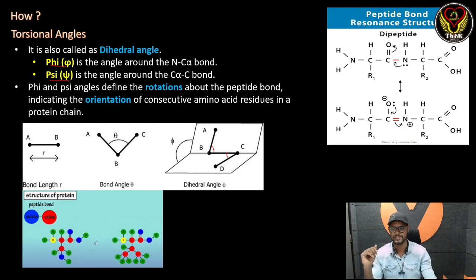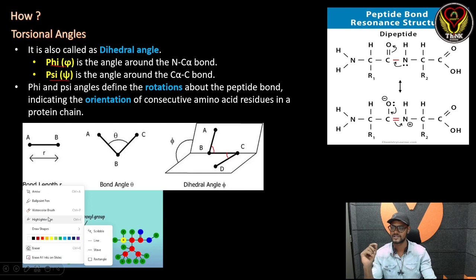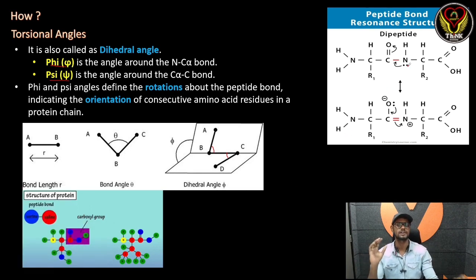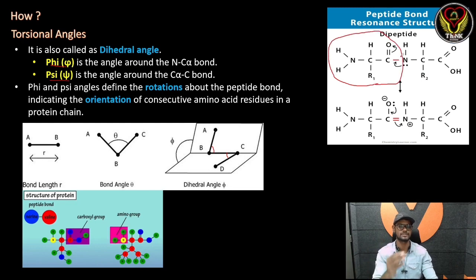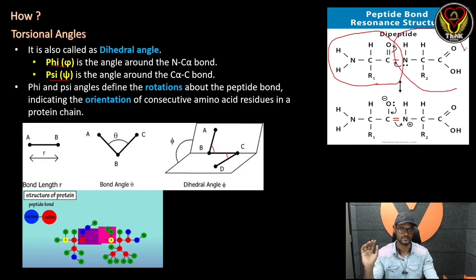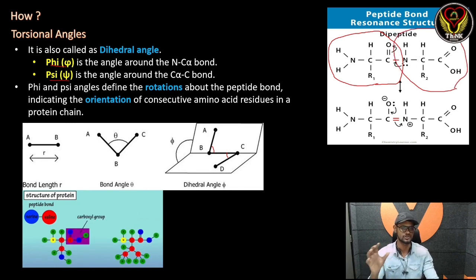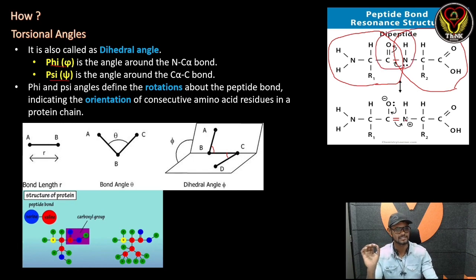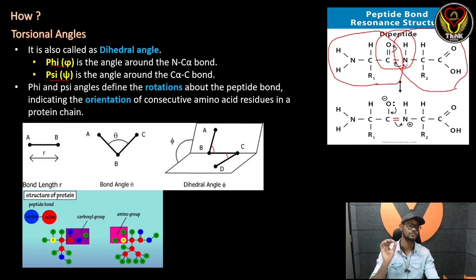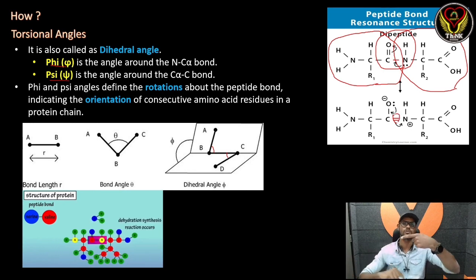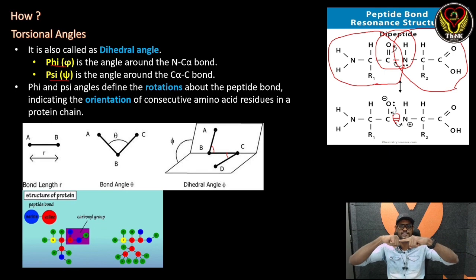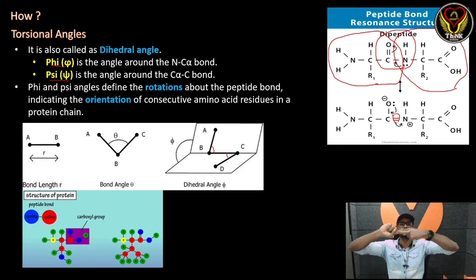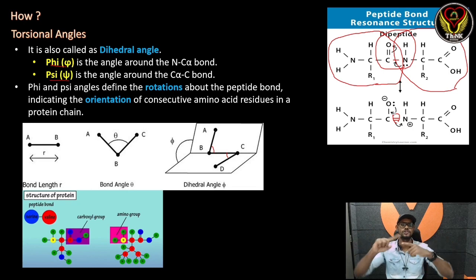If you look at the picture, and at the dipeptide bond — this is an amino acid, this is an amino acid group, and this is another amino acid. We can add one partial double bond. If a partial double bond is attached, it will not rotate easily — because of the partial double bond character, rotation is restricted.